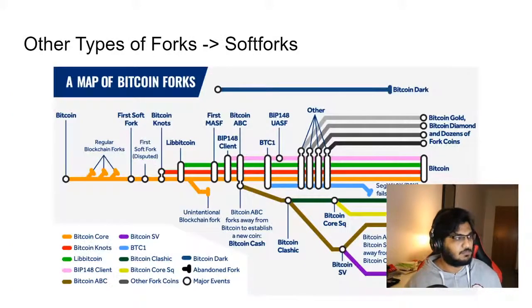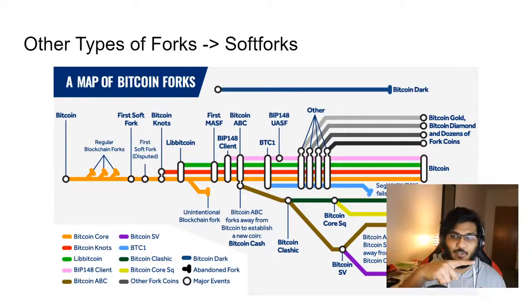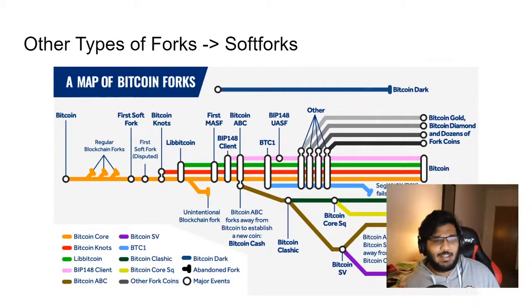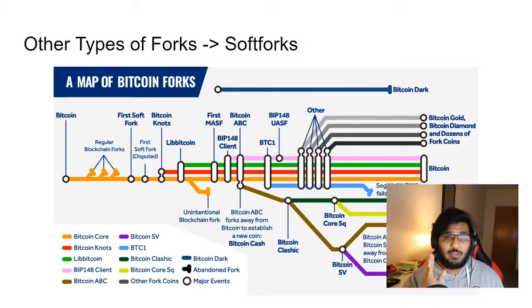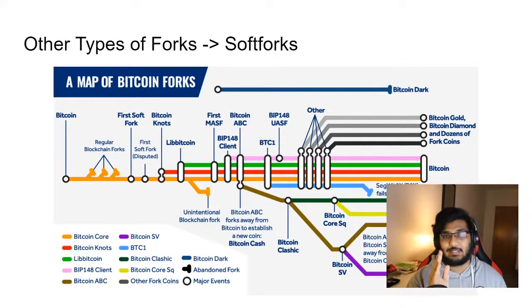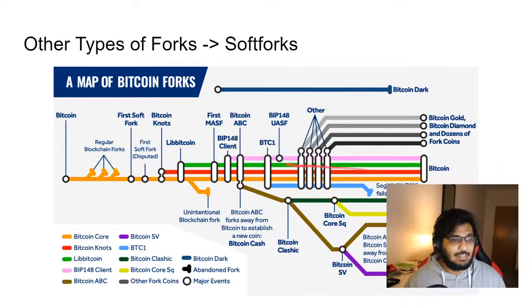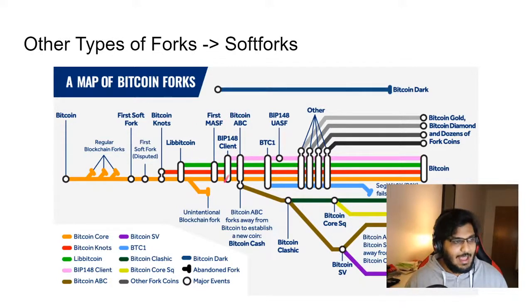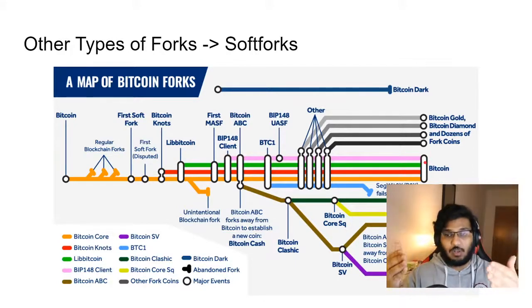Another type of fork is a soft fork. A soft fork is whenever you put something into the network that is backwards compatible — the upgrade exists but doesn't require everybody to use it. You would have seen things like BIP 148 in BTC. You have the original Bitcoin, and in parallel you add these other items as soft forks. If you want, you can use it, but you don't have to.